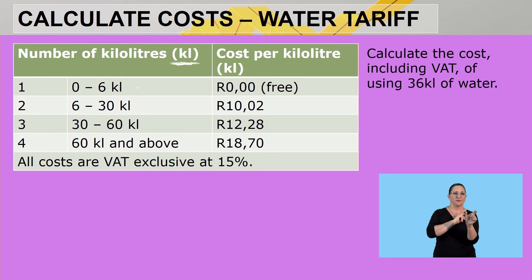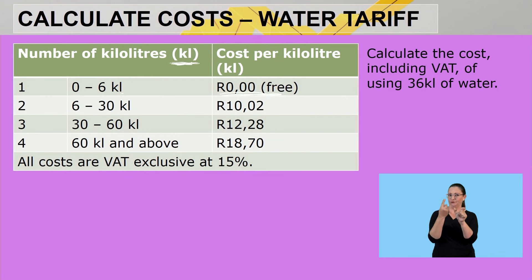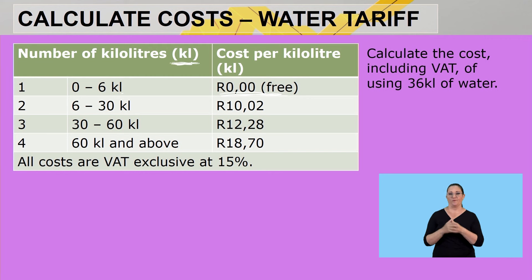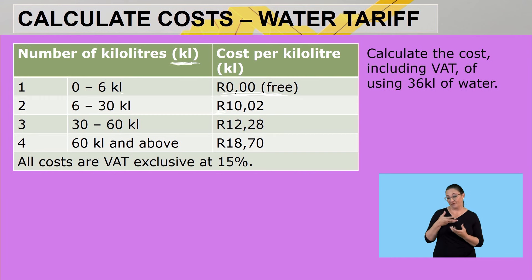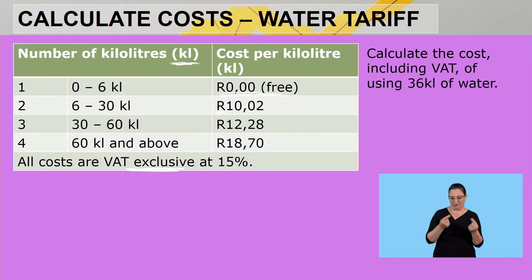This is what we call an interval or sliding scale: from zero to six, from six to thirty, from thirty to sixty, and so on as a continuation. The first six kilolitres are for free to accommodate those households with no income or less income. The costs are given in rands, and it says exclusive, meaning all these costs do not include VAT.